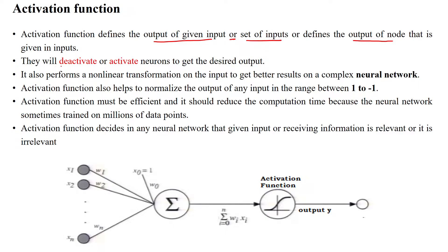These neurons will deactivate or activate based upon the input to get the desired output. It also performs non-linear transformation by activating the neuron based upon the input to get better results on complex neural networks. The activation function helps to normalize the output of any input, which ranges between plus 1 to minus 1. The activation function must be efficient and should reduce computational time, because neural networks are sometimes trained on millions of data points.